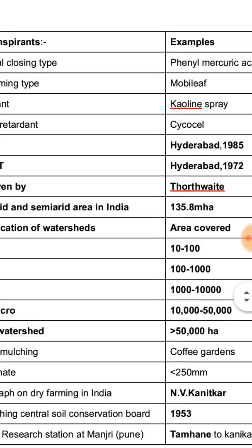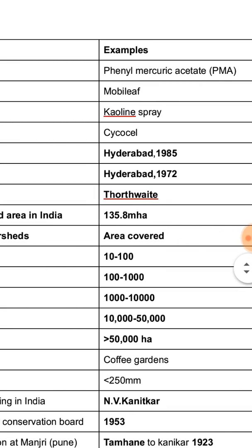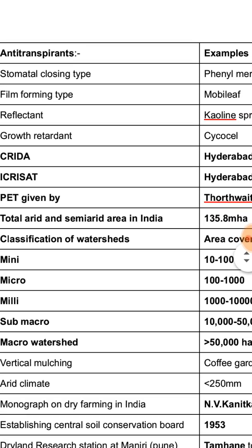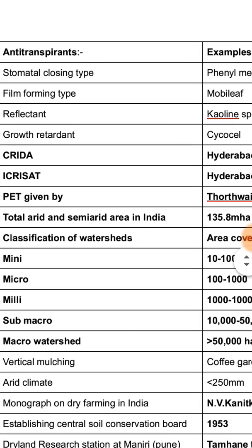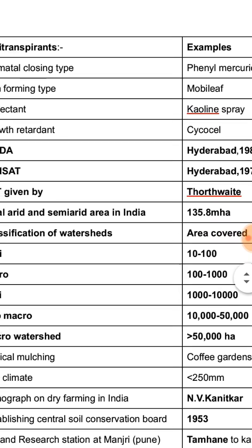Types of anti-transpirants: stomatal closing type includes phenyl mercuric acetate (PMA); film-forming type includes mobile oil, exact canal, etc.; and reflecting type includes kaolin spray at 5%.